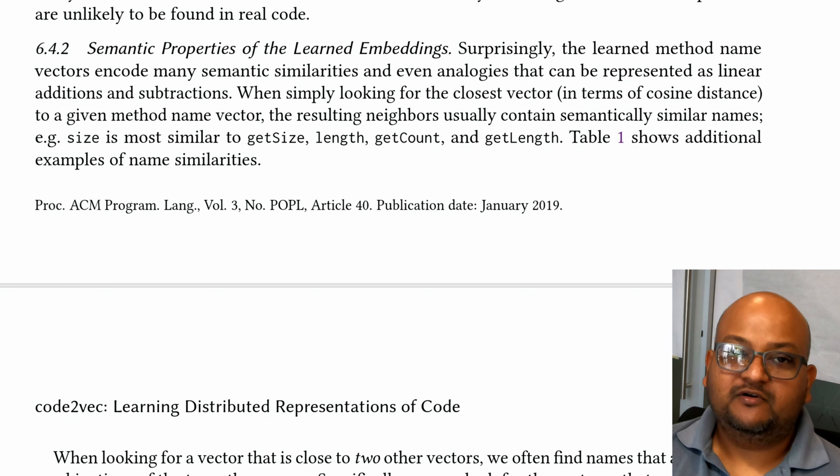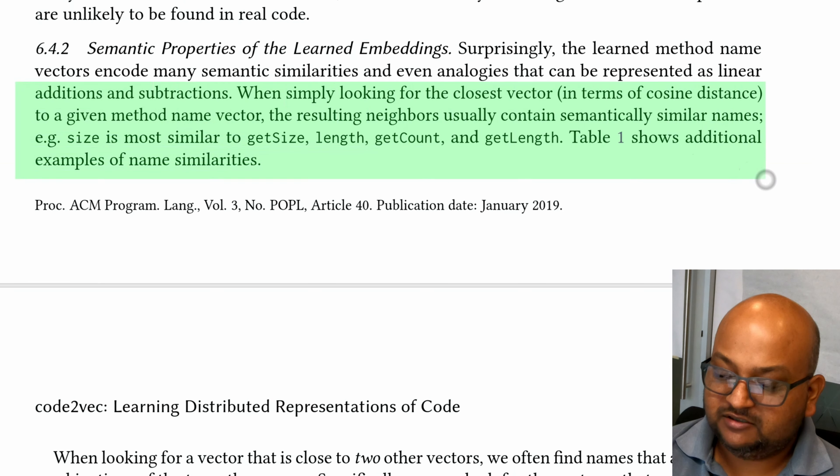This vector embedding of code has some very interesting properties. We see that vectors that are close to each other end up being semantically similar as well. For example, the vector for size is similar to other methods that do similar things like length or count or get length.